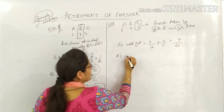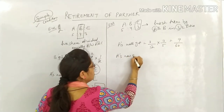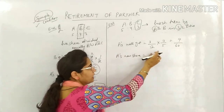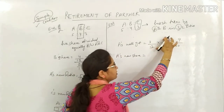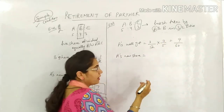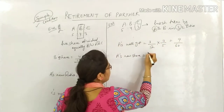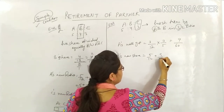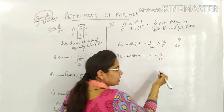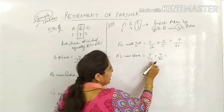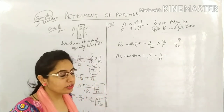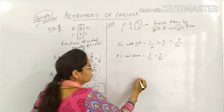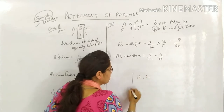A's new share: A had 5/12 previously. Now add 9/60. We need to find the LCM of 12 and 60. Students sometimes don't know how to find LCM, so let me explain. The smallest number is 12, start from its table and check if both numbers can be cut.